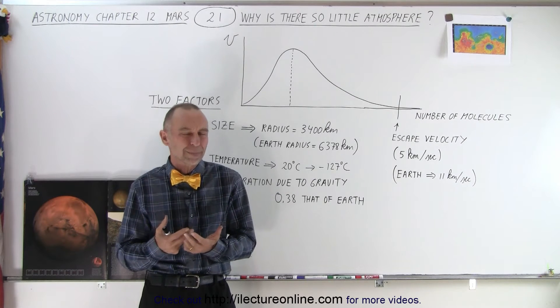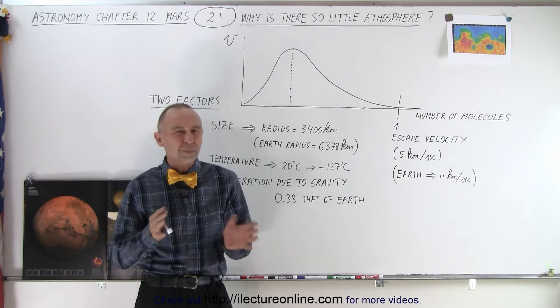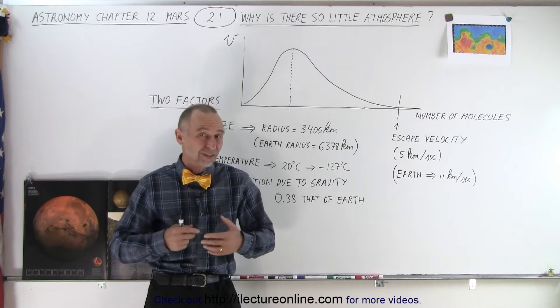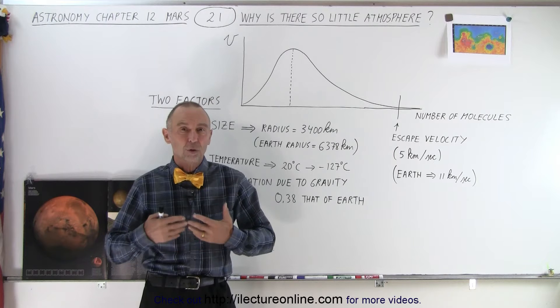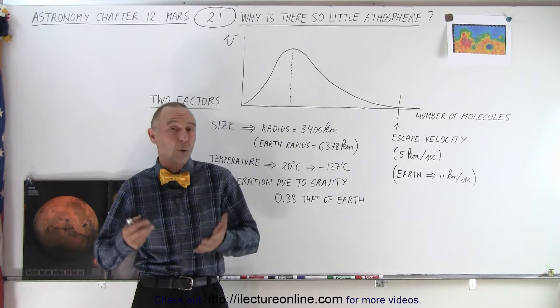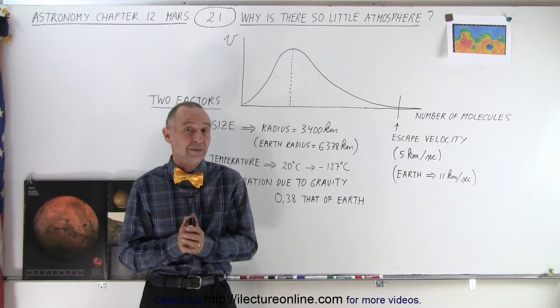And the question is, how much was there? The estimates range about half of what the atmospheric pressure is on the Earth. So still plenty of atmosphere so that the planet could support liquid water and potentially even life.